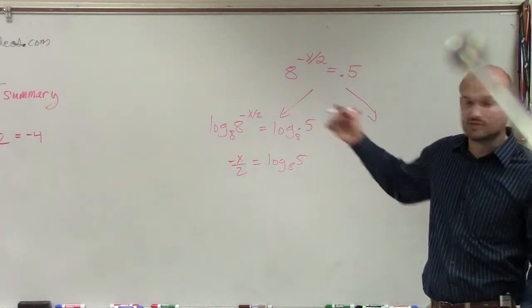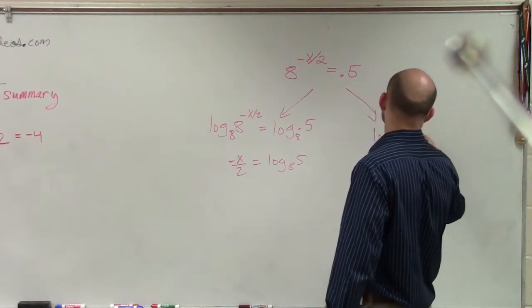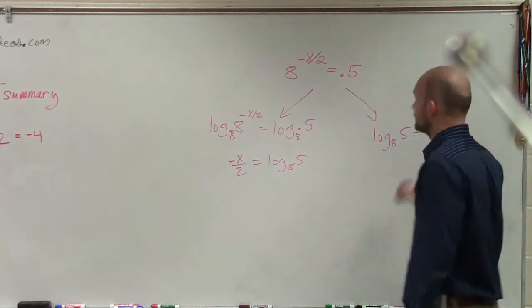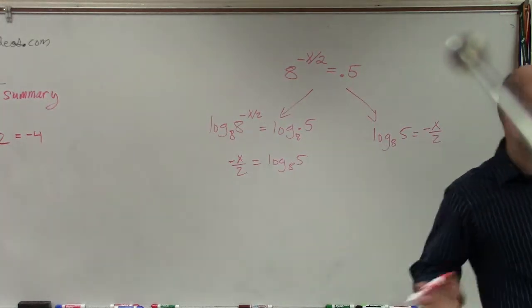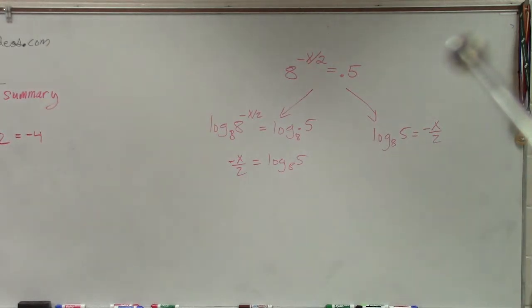Another way you could do this is just convert this over to logarithmic form. So therefore, it's log base 8 of 5 equals negative x over 2. Either way, you can see I have the exact same equation coming in. Is it 5 or 0.5? It's 0.5. Sorry.